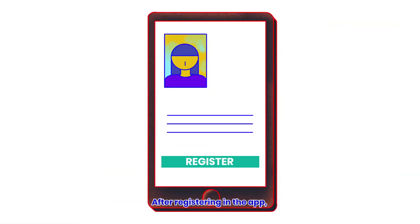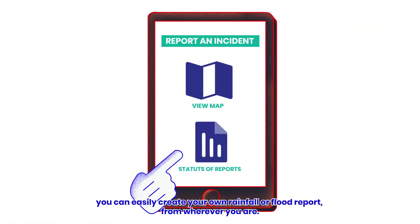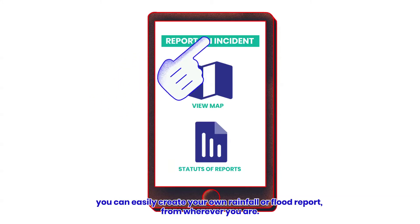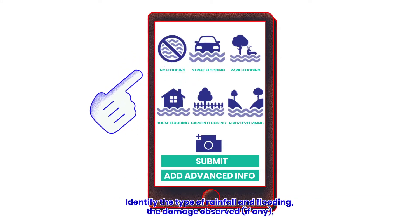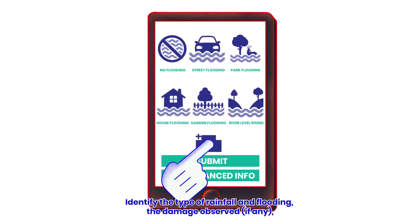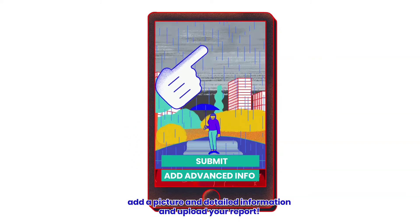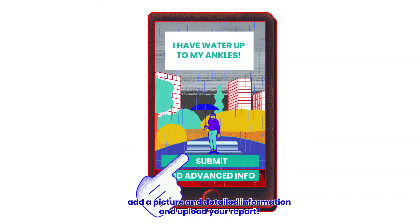After registering in the app, you can easily create your own rainfall or flood report from wherever you are. Identify the type of rainfall and flooding, the damage observed, if any, add a picture and detailed information, and upload your report.